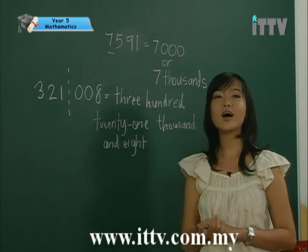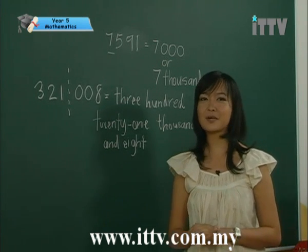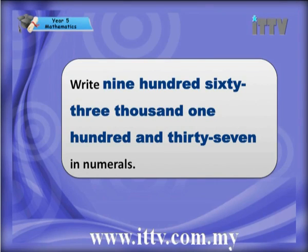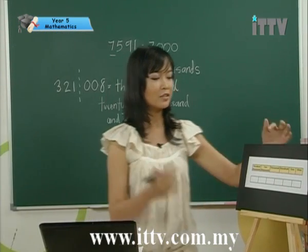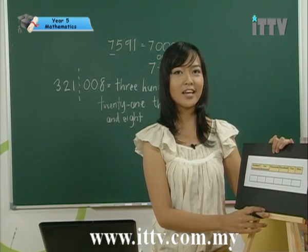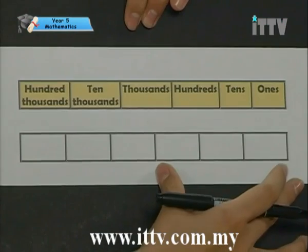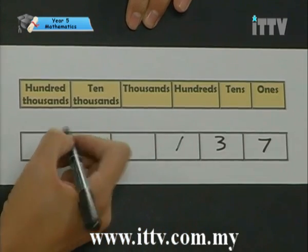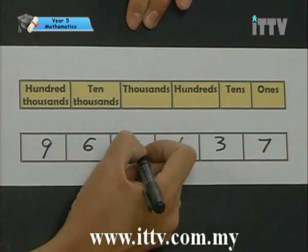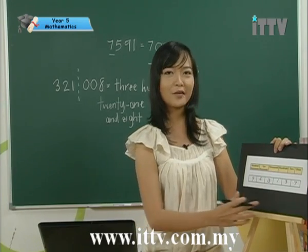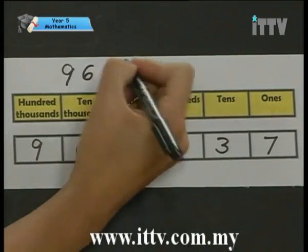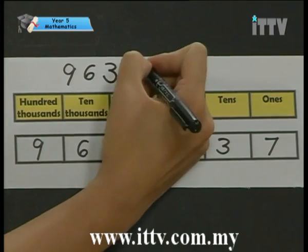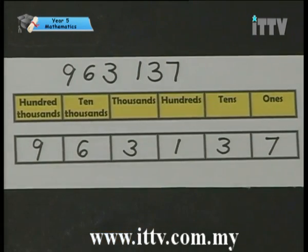Now what if you are given the words and asked to write the numerals instead? We fill in the numbers in a place value chart first. It says 963137 — let's fill in from the back. The last 3 numbers are 137, and for the thousands we have 963000. Remember to leave a small space for the thousands. The answer is 963137.